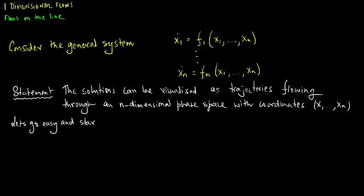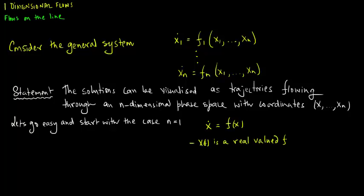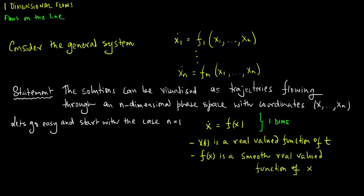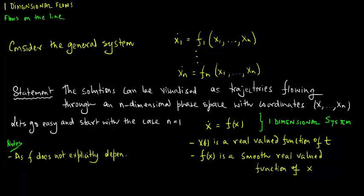Let us start with the case n is equal to 1, that is x dot is equal to f of x, where x of t is a real valued function of t and f of x is a smooth real valued function of x. This is an example of a one-dimensional system. As the function f does not explicitly depend on time, the resulting equation is autonomous.